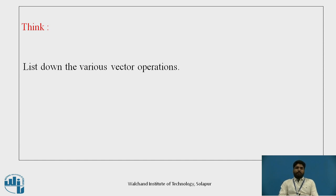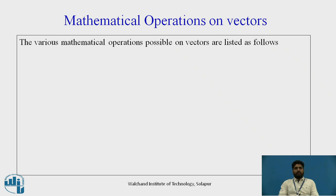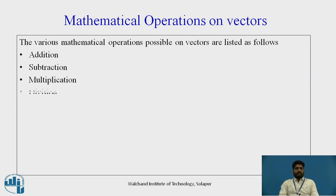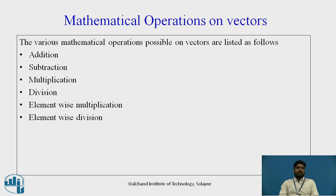Pause the video for a few seconds and list down the various vector operations you know. Now let us see the vector operations we can perform on Scilab — mathematical operations on vectors. The various operations possible are: addition, subtraction, multiplication, division, element-wise multiplication, element-wise division, and transpose.